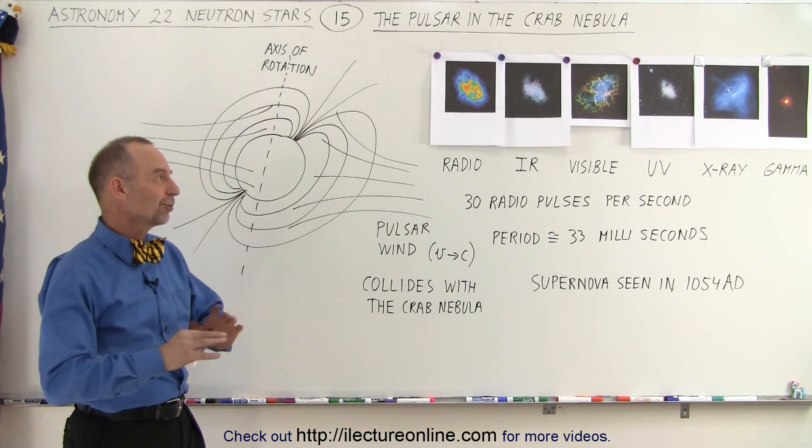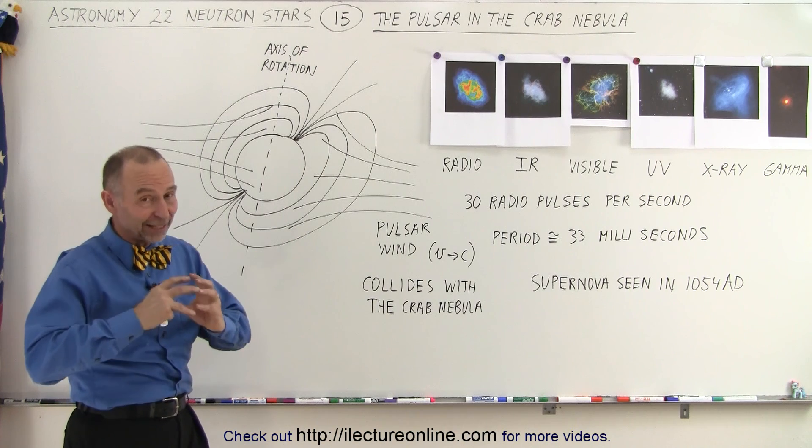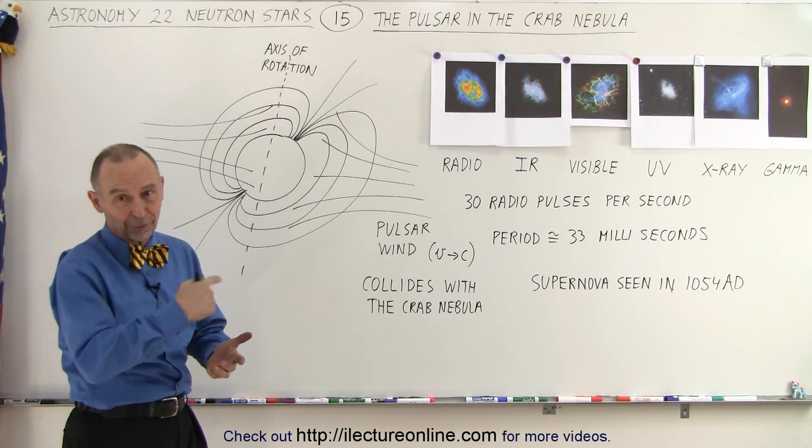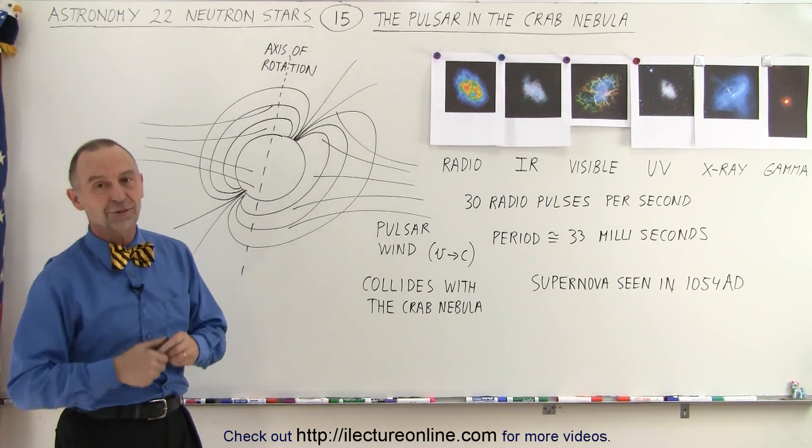Oh it's done. So the supernova is done and the remnant of it is a neutron star which is of course in this case a pulsar because we can see the pulses of the radiation.